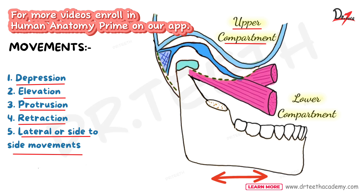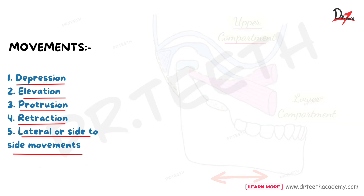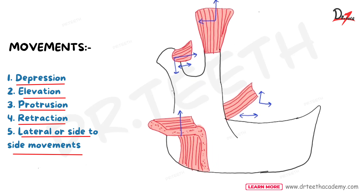In side-to-side movement, for example, if the head of the right side is gliding forward, the head of one side will glide forward but the head of the other side will merely rotate on a vertical axis.